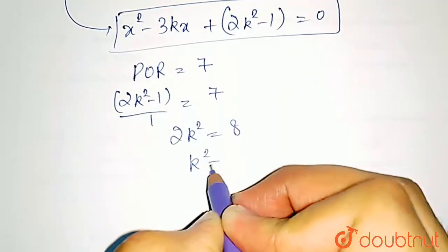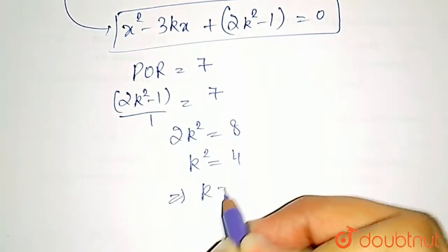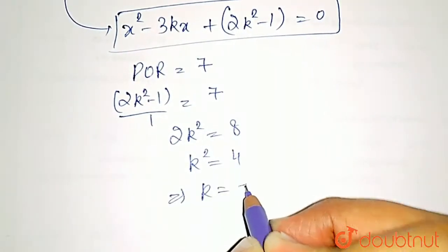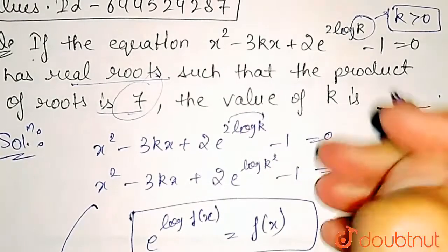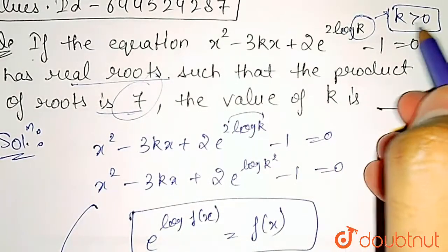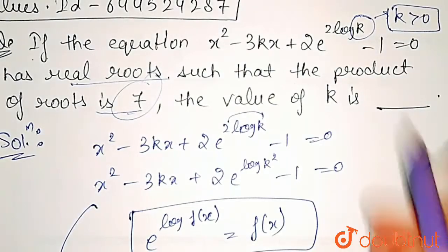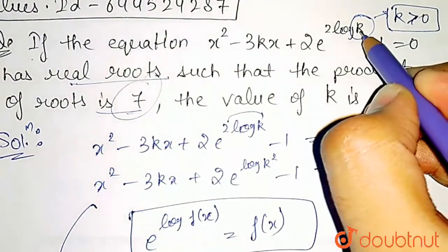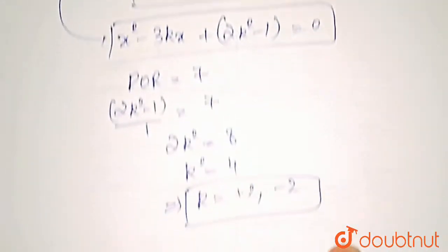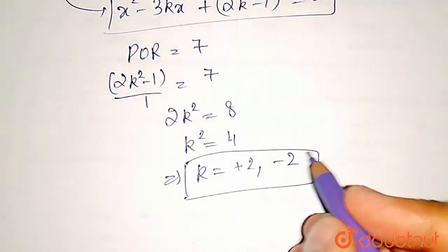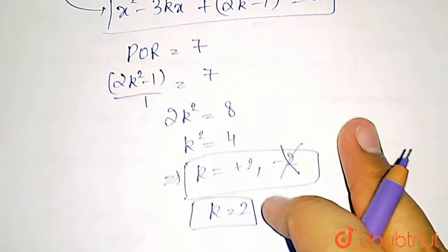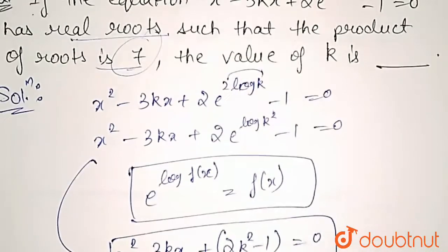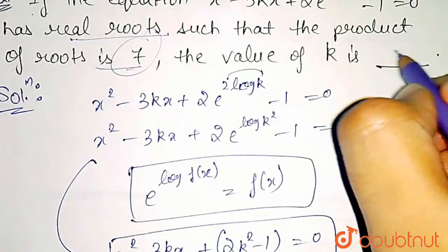This implies k is equal to plus 2 or minus 2. But at the start of the question, we already established that k should always be greater than 0 — k must be positive because it is the input of log. So the negative value is rejected, and k is only equal to 2.